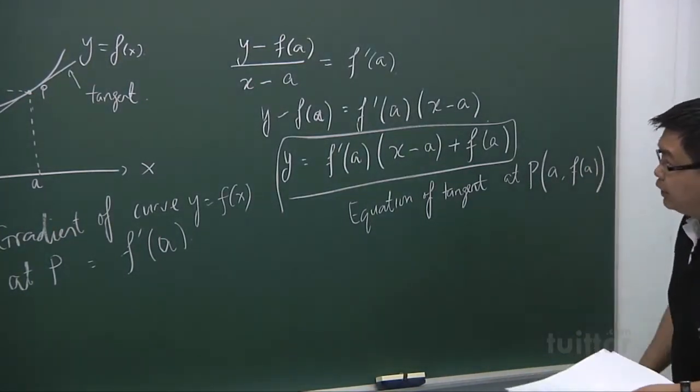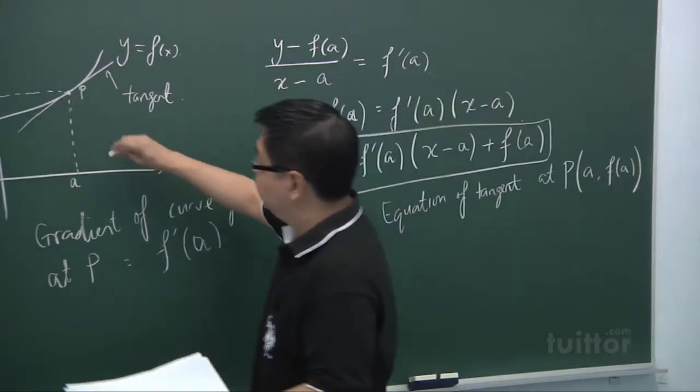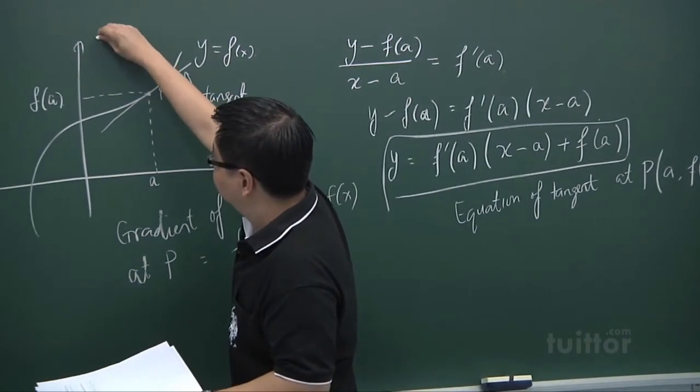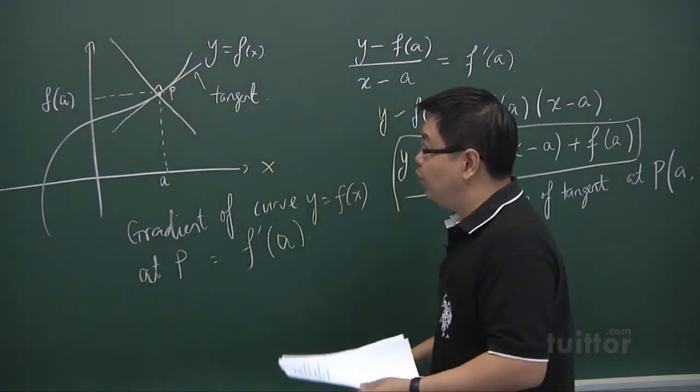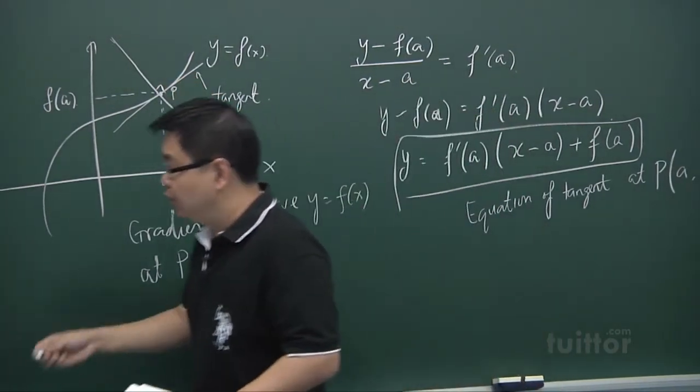Now how do we find the equation of the normal? The normal basically is the line that is perpendicular to the tangent. To find the equation of the normal, what we're going to do is the following.